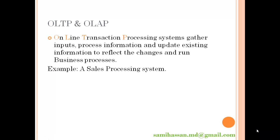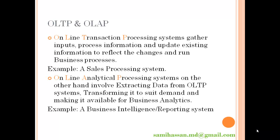Now let's look at OLTP and OLAP systems. An online transaction processing system, or OLTP, gathers inputs, processes information and updates existing information to reflect changes and run your business processes. For example, a sales processing system accepts orders from customers, enters that order into the system, looks for inventory of the particular item, and bills the customer for it. This is a business activity — you are making a sale to a customer.